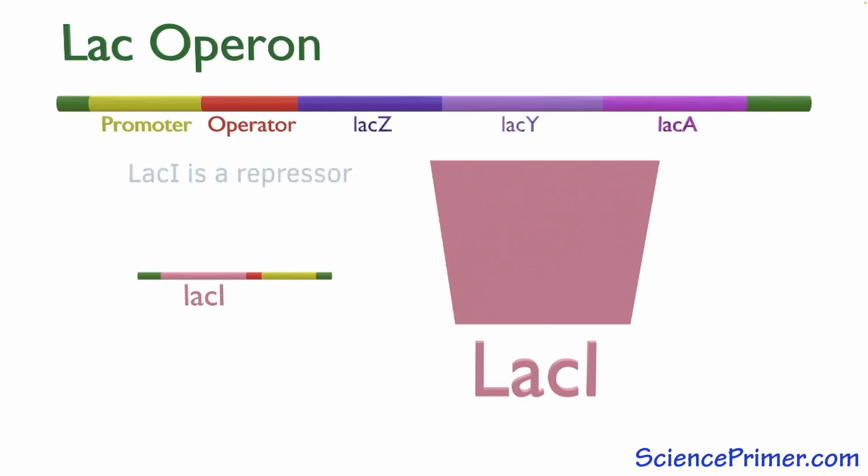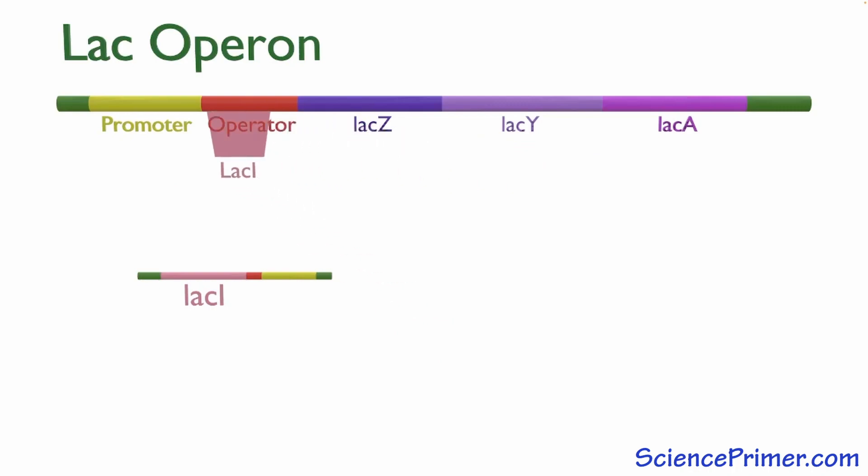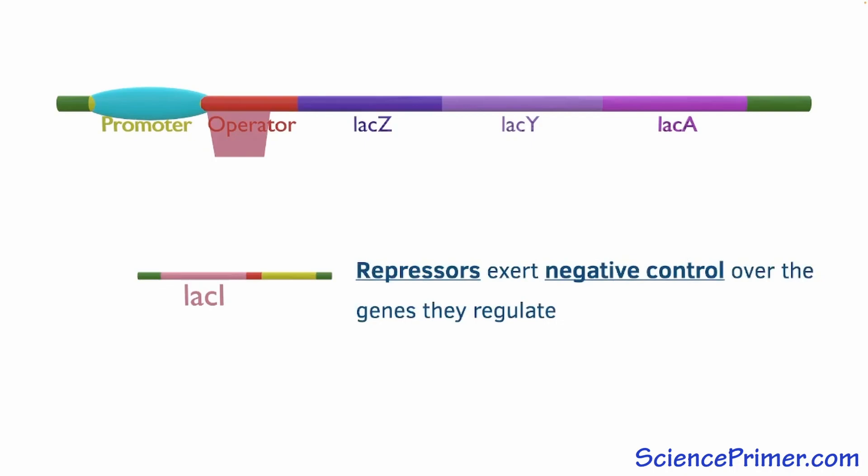LAC-I is a repressor, meaning that when it is active, its presence prevents the expression of the genes in the operon. It does this by binding to the operator region, physically blocking the activity of RNA polymerase. Regulatory proteins that act to prevent gene expression exert negative control on the operons they regulate. Negative control is just another way of saying it is a repressor.